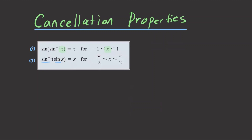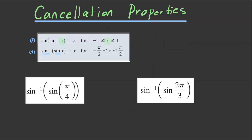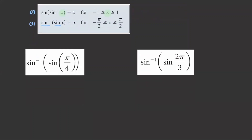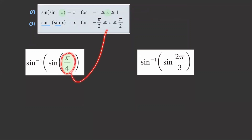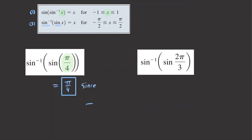Let's see how we can apply these properties with examples. For the first one, we want to evaluate sine inverse of sine of pi over 4. We need to check that pi over 4 is within the restricted domain for sine, which is negative pi over 2 to pi over 2. Since pi over 4 is within that boundary, we can apply the cancellation property, and the answer is simply pi over 4.